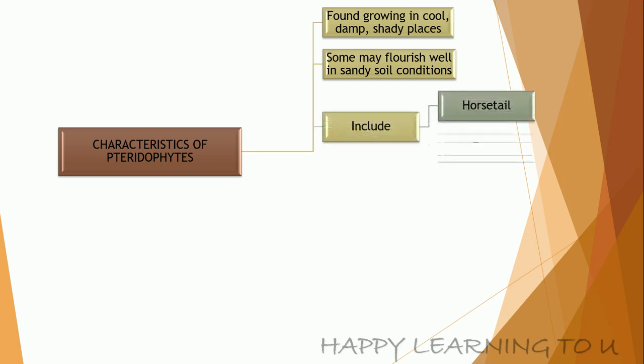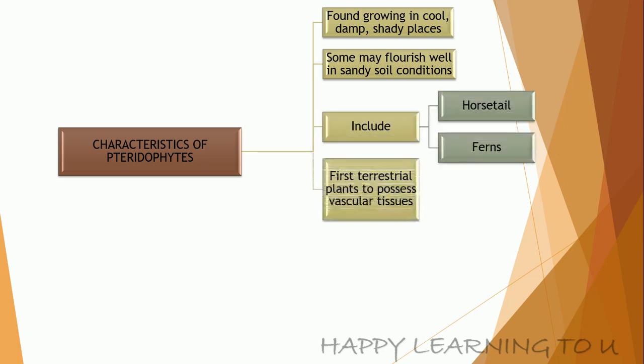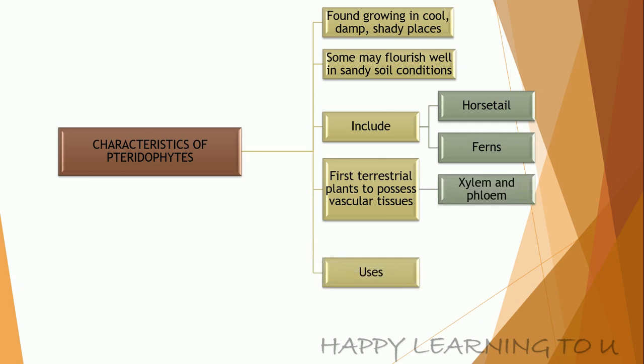Pteridophytes include horse tail and ferns. These are also the first terrestrial plants to possess the vascular tissues, basically the xylem and phloem.